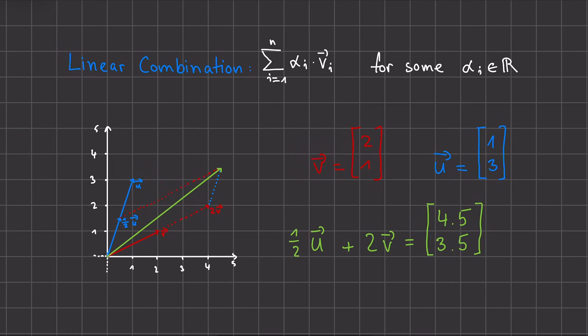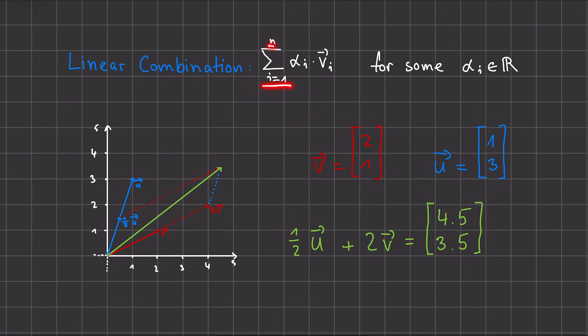Formally, a linear combination can be written as such, that we sum over all our vectors from i equals 1 to n, and in each step we multiply them by a scalar a_i. In our simple case here, we would have had n be equal to 2, our a_1 be 1/2, and our a_2 be 2.